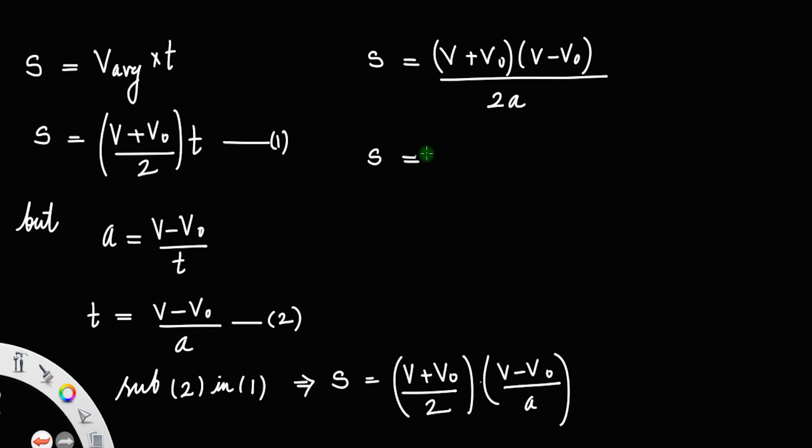s equals v² - v₀² divided by 2a. Taking 2a to the left, you get 2as equals v² - v₀², or v² - v₀² equals 2as.